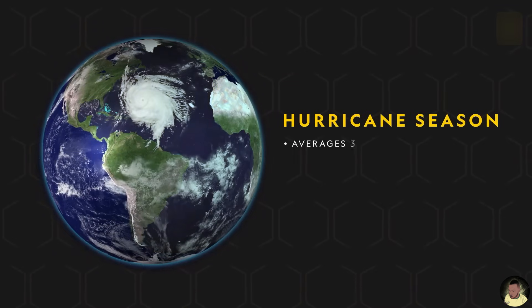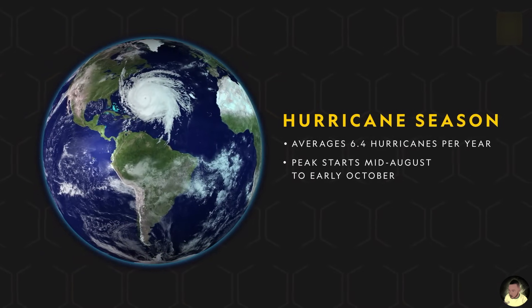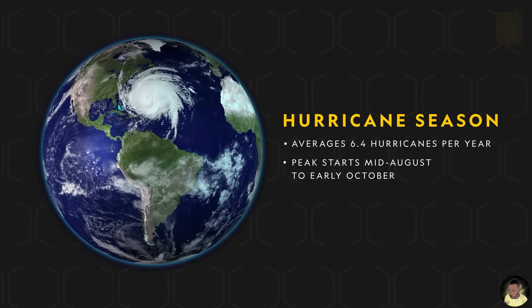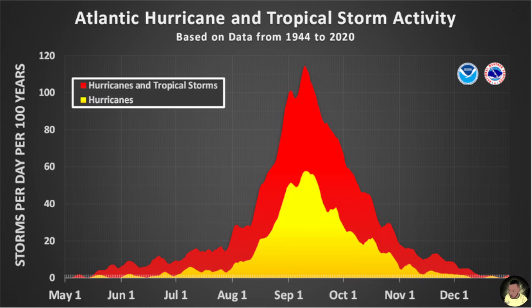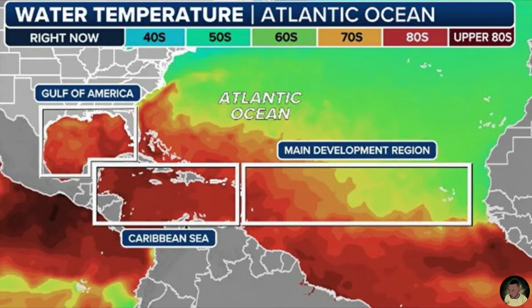The Atlantic hurricane season starts on the 1st of June and runs through to November 30th, peaking in late summer and early autumn when temperatures in the Atlantic basin are at their warmest. The main development region varies over the season, with storms frequently forming in the Gulf of Mexico, the Caribbean Sea, the tropical Atlantic, and in areas as far east as the Cape Verde islands.